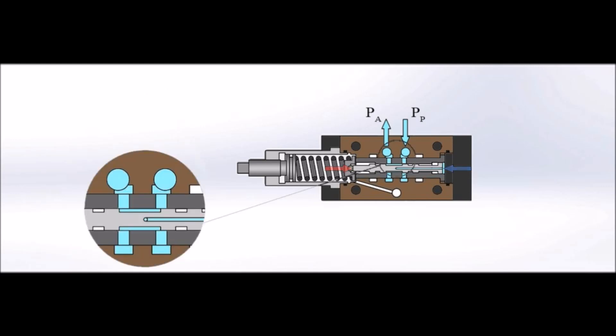The hydraulic force acts on the spool. Pressure from channel A acts on the area of the valve. The spring force acts on the spool in the opposite direction.